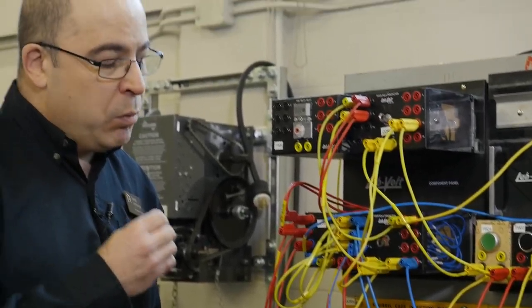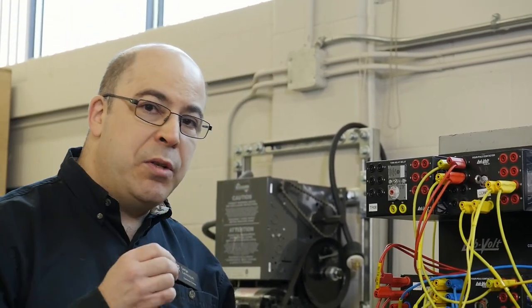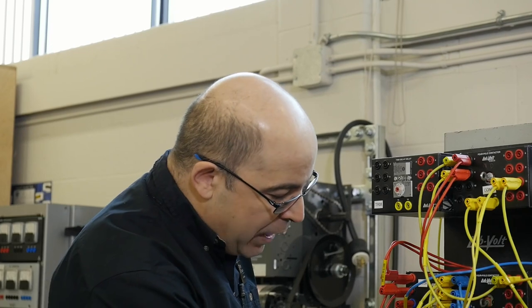The eddy current brake, what we're going to do is we're going to run DC current through the windings in the stator and we're going to create a DC magnetic field that will interact with the rotor of the machine to bring it to a very quick stop.